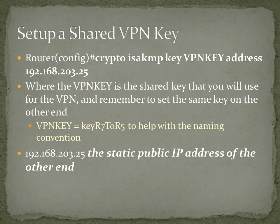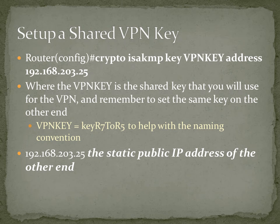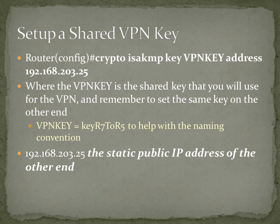Then you want to set up a shared VPN key. The command is: crypto ISAKMP key, then your VPN key name, then address, then whatever your external address is. VPN key is the shared key you will use for the VPN. I'd suggest naming it something like key R7 to R5 — so if you're connecting R7 to R5, you know what that key belongs to. You'll end up with keys like key R7 to R6, key R7 to R5, key R7 to R4, which makes troubleshooting much easier.